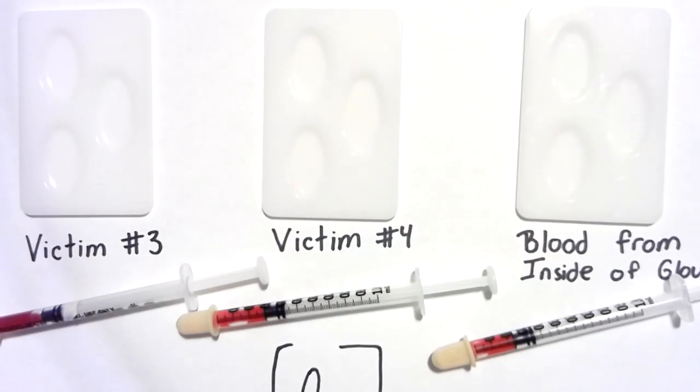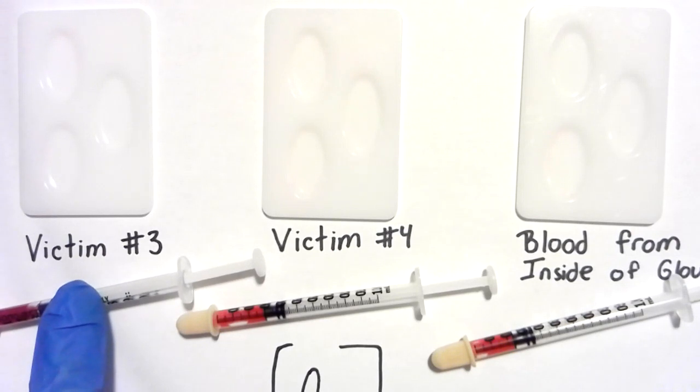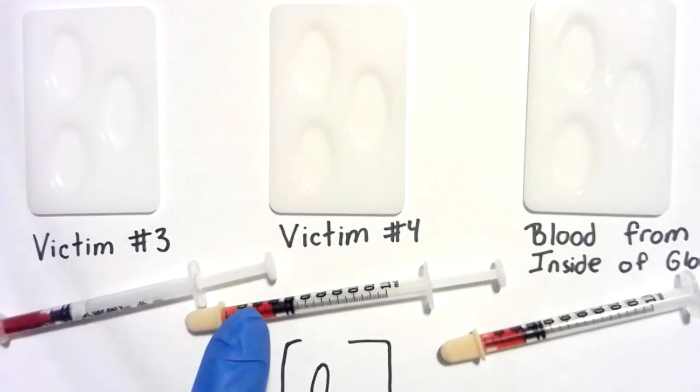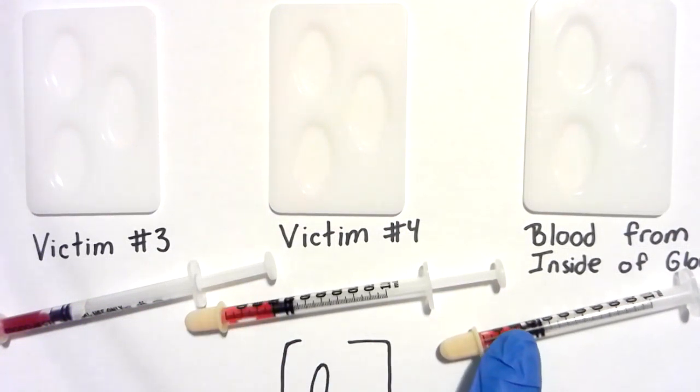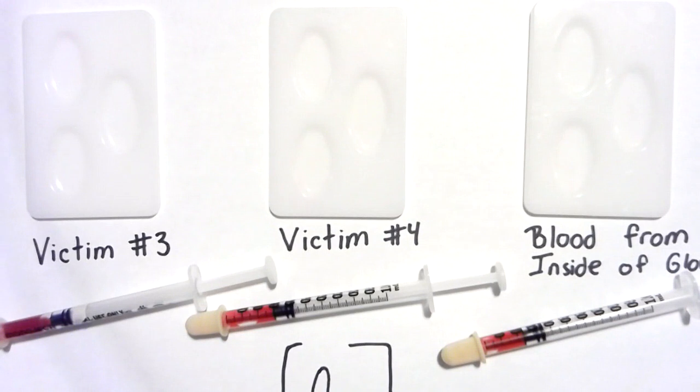We are now going to run blood tests on our three blood samples we retrieved from our crime scene. We will be blood typing the blood from victim number three. We were able to obtain a very small amount of blood from victim number four, and we did find a small amount of blood from the inside of one of the gloves found on scene.